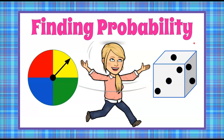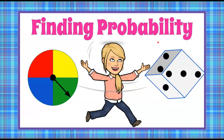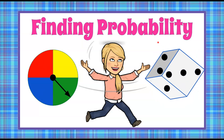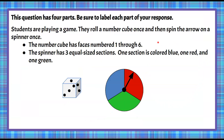Welcome to The Magic of Math. Today we're finding probability when we spin a spinner and roll a number cube. Here's our question — it has four parts and you're asked to label each part of your response. I hope you have paper and pencil ready to work along with me. If not, pause and get some.